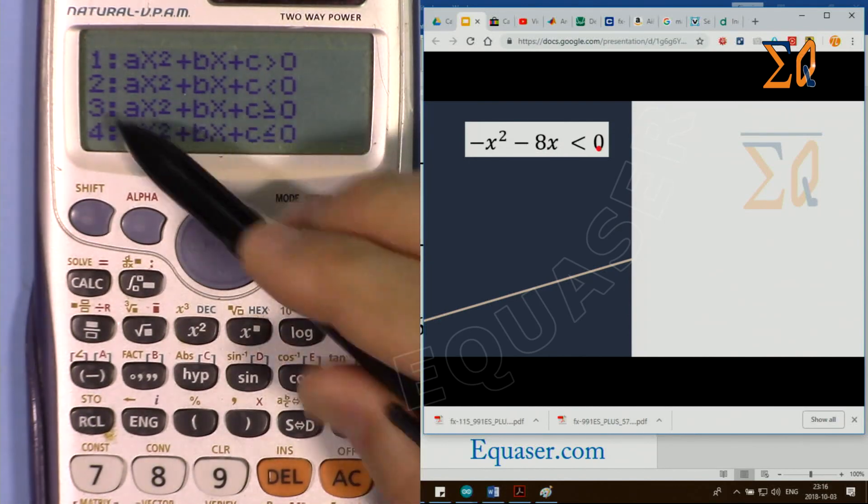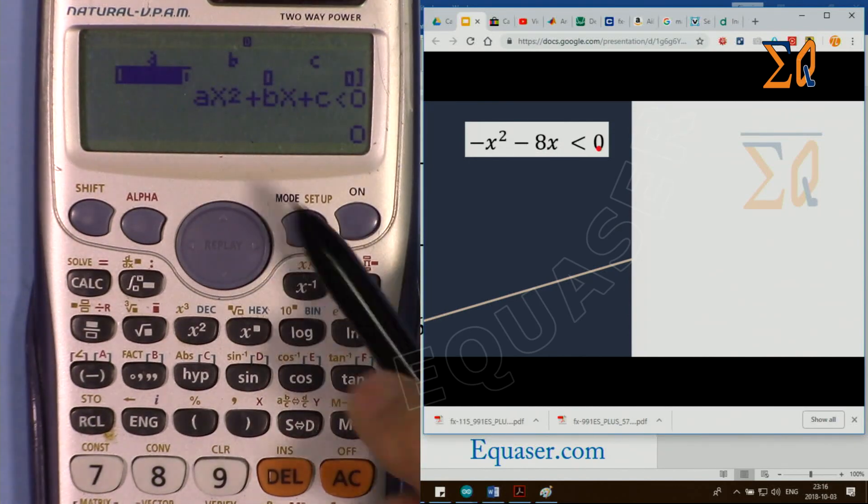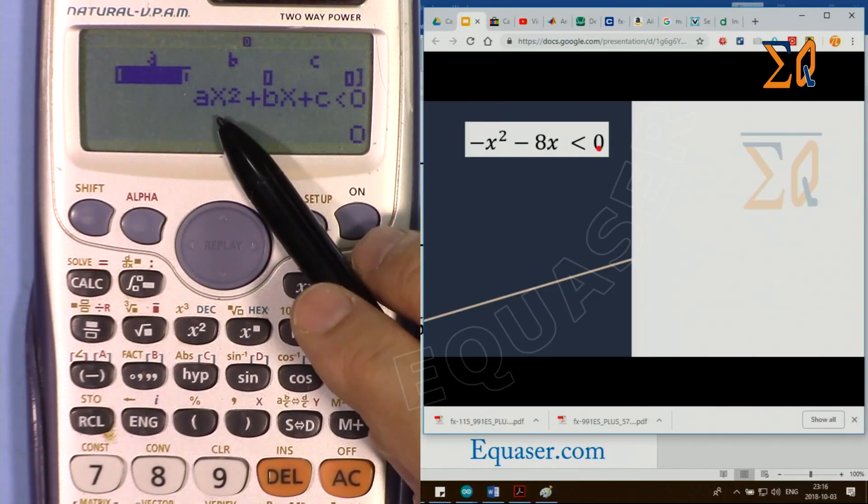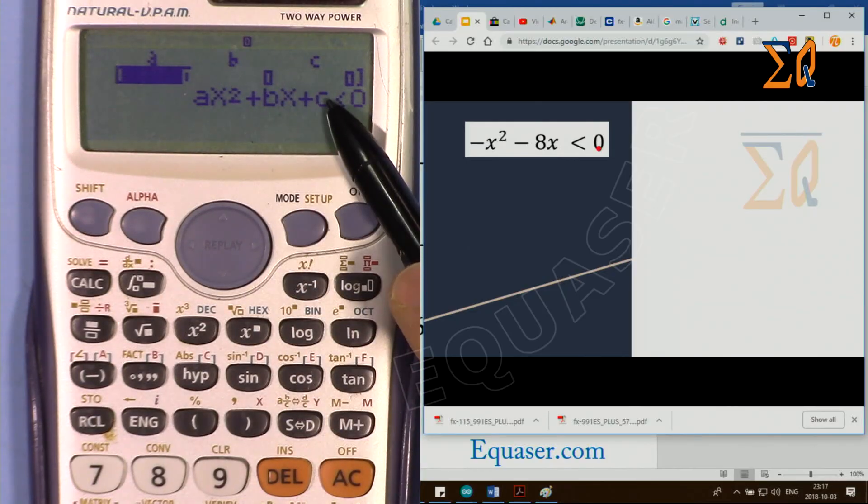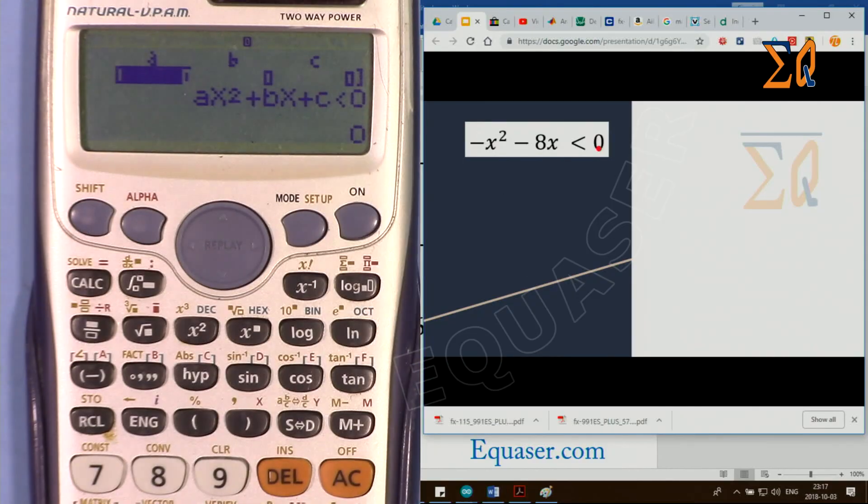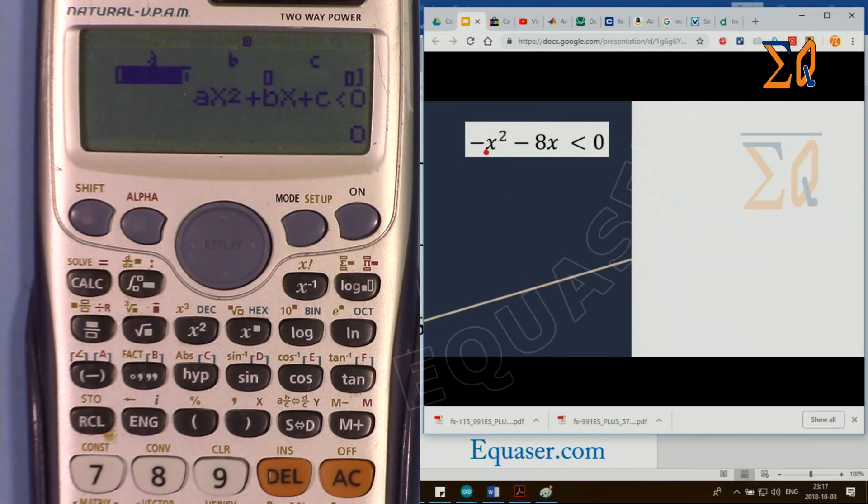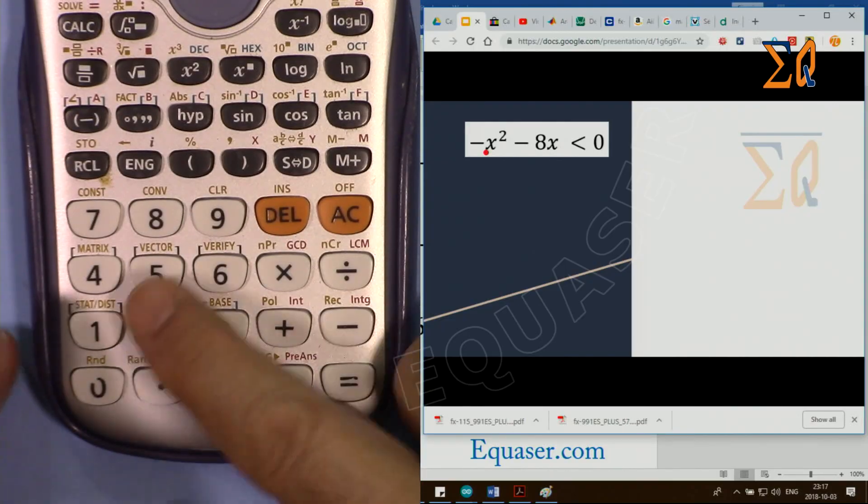Now this is asking for coefficients of the first term, second term, and constant of the last term: ax² + bx + c. Our first coefficient a is −1, so I'm pressing this minus and 1.